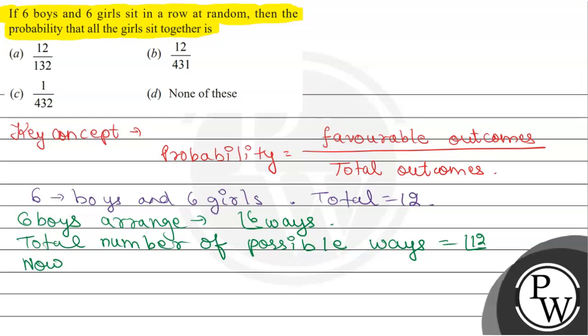Now, once the boys are arranged with respect to each other, we have to place 6 girls. So to understand this, let us draw one notation.